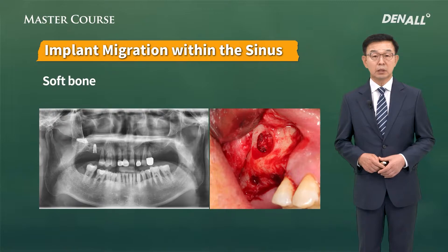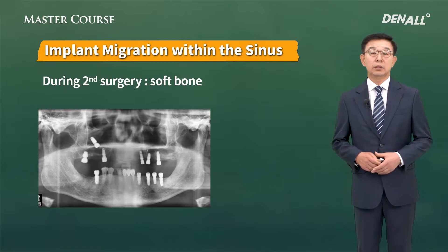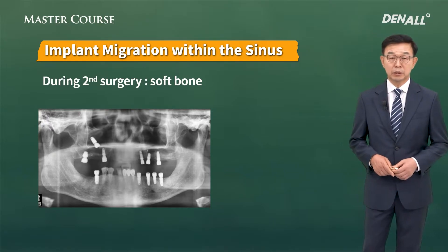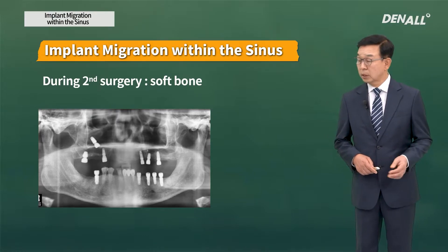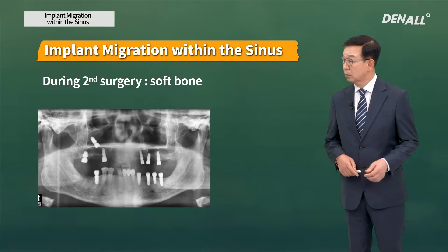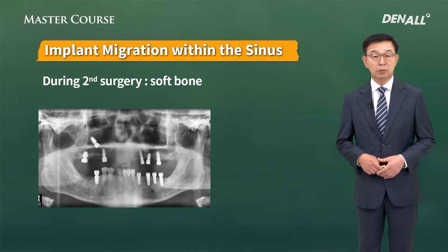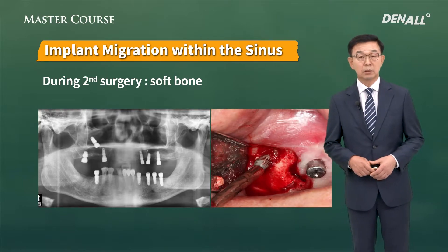In this case, the bone was very soft. When you do crestal approach, if you do not make adjustments properly, it may migrate into the sinus. The implant migrated into the sinus. During secondary surgery, crestal approach was done and an attempt was made to place the implant. However, the bone was very soft and crestal approach was not done properly. As the healing abutment was connected, the implant migrated into the sinus and the patient came to my dental clinic. In the end, lateral window approach was taken to remove the implant.